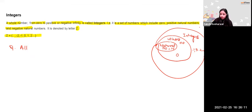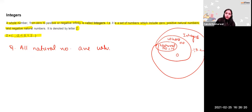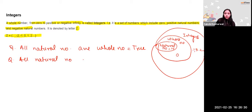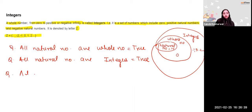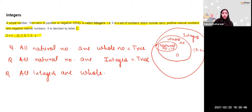All natural numbers are whole numbers — true. All natural numbers are integers — true. But are all integers whole numbers? That is false. Why? Because negative 1 is an integer but not a whole number. So that statement is false.